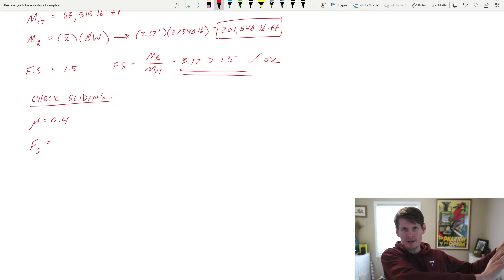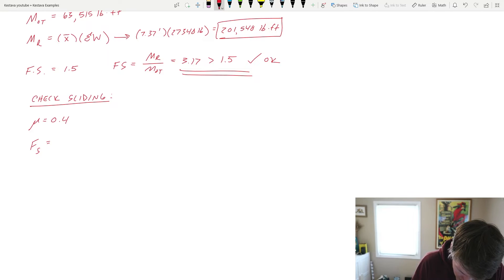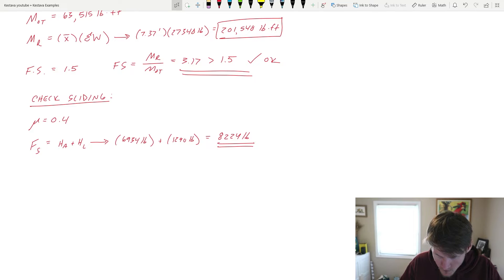This is the amount of force that's trying to push our cantilevered system out of the way and cause problems. That is equal to HA plus HL that we solved for back up above. Well, those equal the following, and added together, they get you 8,224 pounds of force.